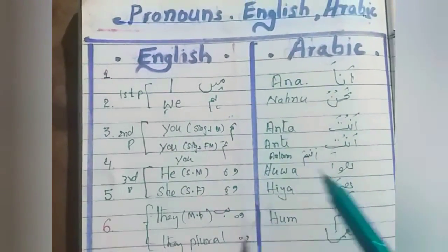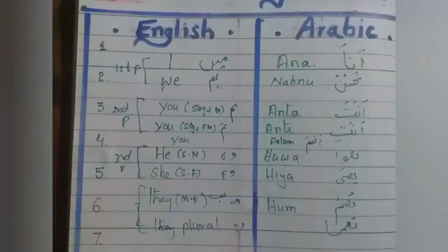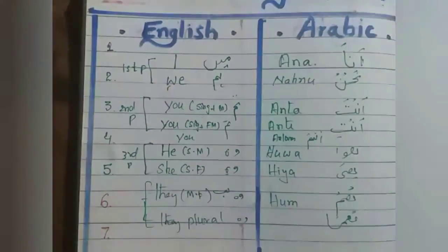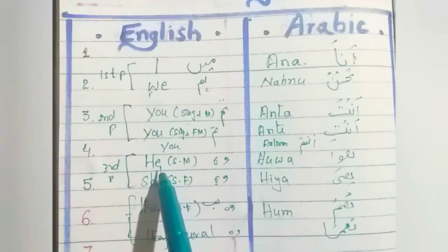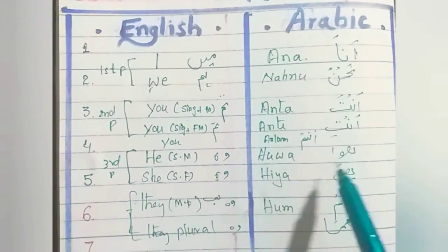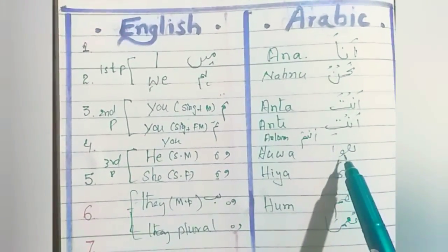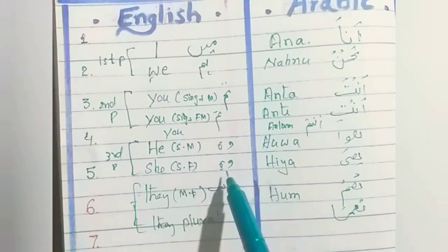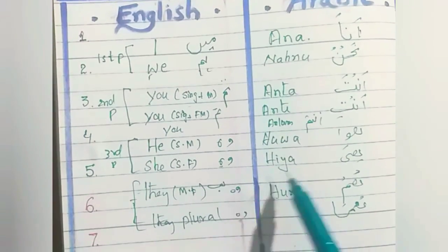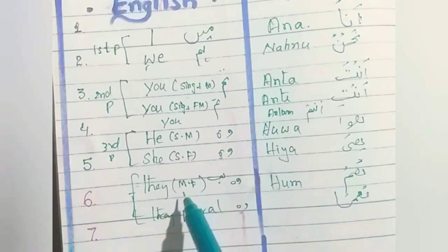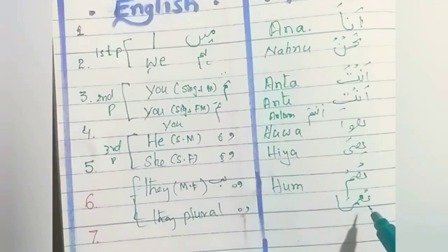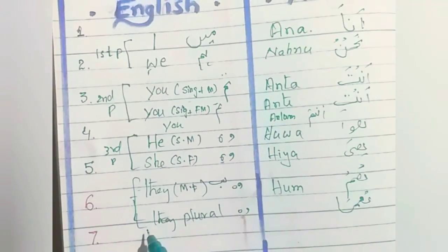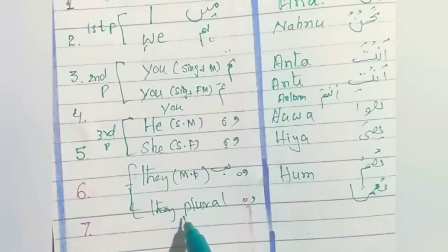Next one is third person: he — wo — and in Arabic, huwa. She, female — wo — hiya. And the plural of these two: wo sub — they — in Arabic hum, and they plural for two persons: huma.